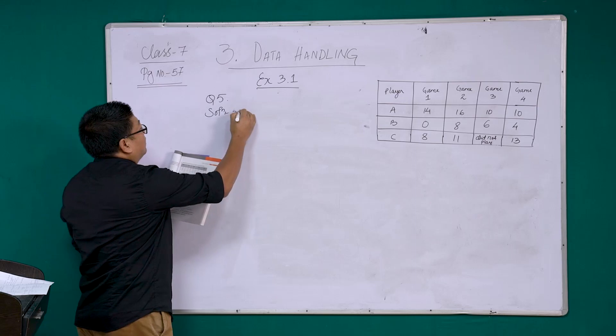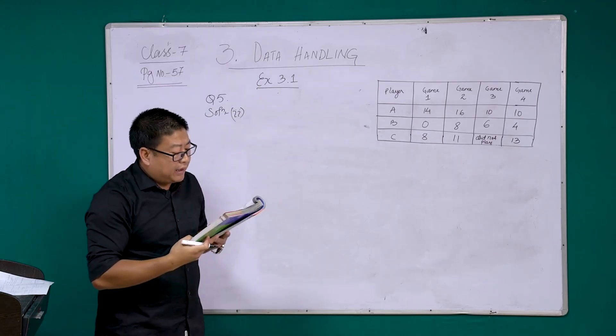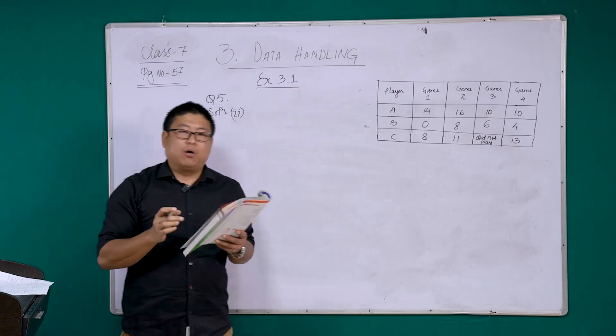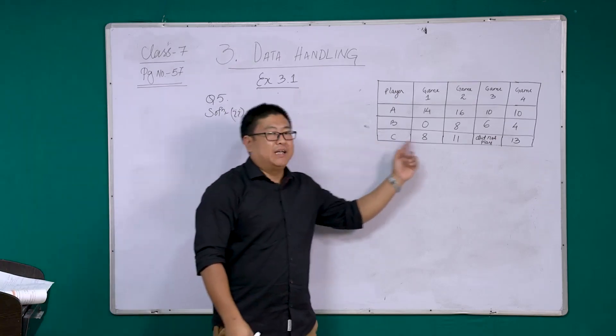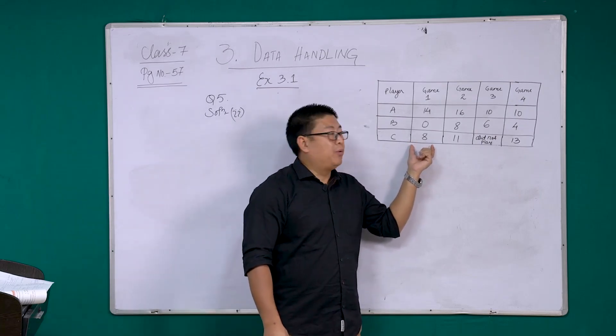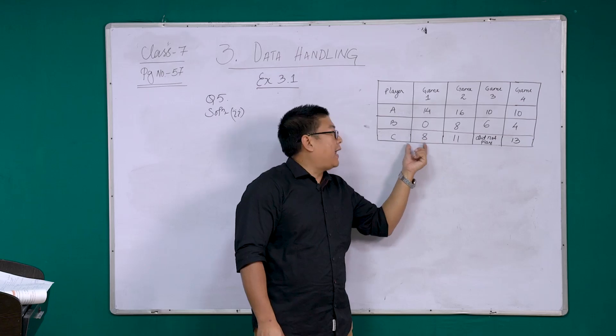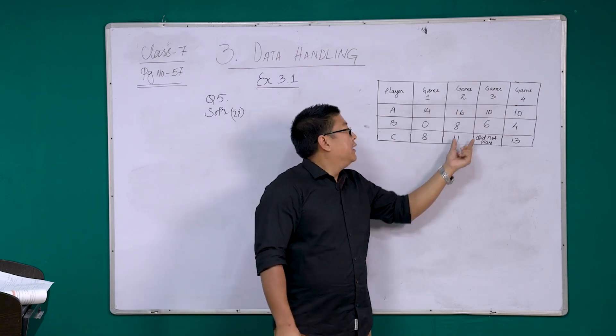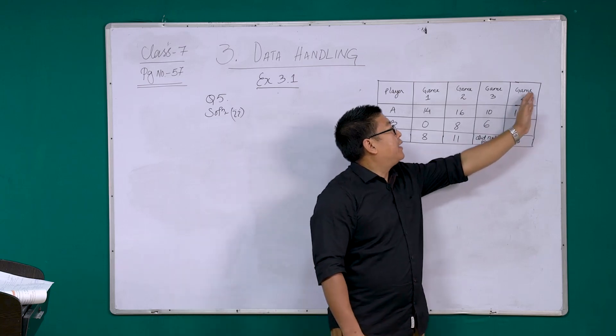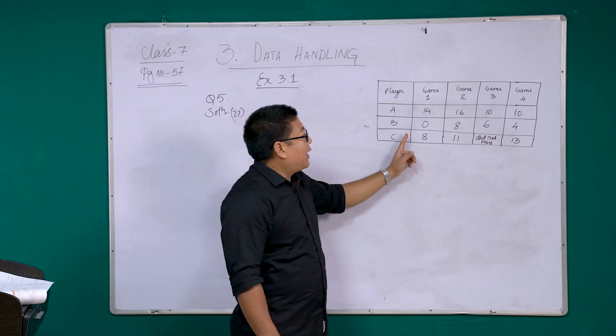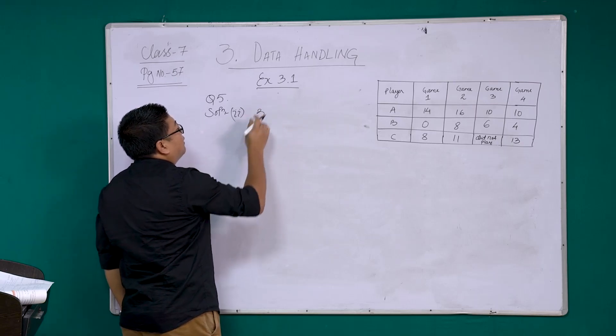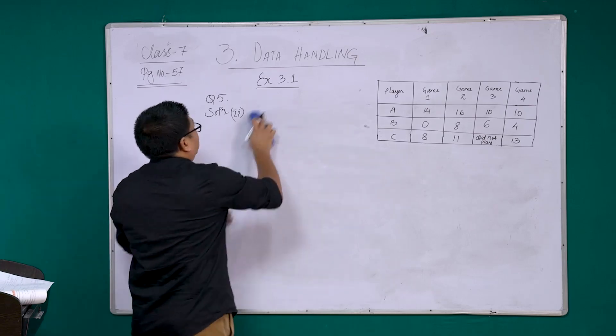Now, the second part. It is stated: to find the mean number of points per game for C, would you divide the total points by 3 or by 4? And why? Now, they are simply asking us, for C, when you find the mean, are you going to divide it by 3 or by 4? So we will look at the table. We can see that in game 1, C scored 8. In game 2, C scored 11. In game 3, C did not play. That means C was not involved in this game. And finally, game 4, C scored 13.